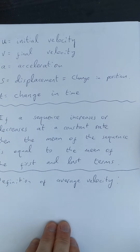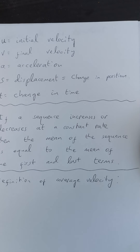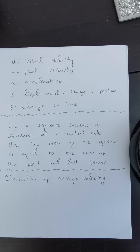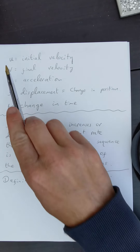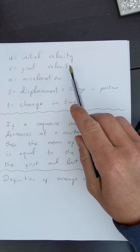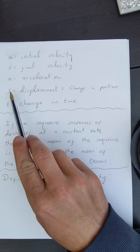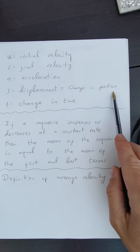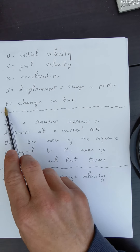A bit of notation first. U is the initial velocity, V is the final velocity of an object in motion, a represents acceleration, s is displacement — which is defined as being change of position — and I'm using T for change in time.